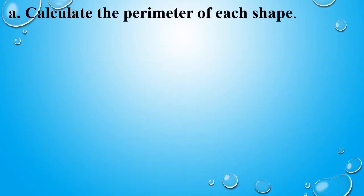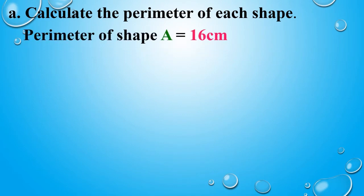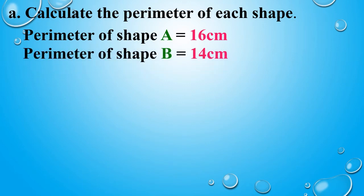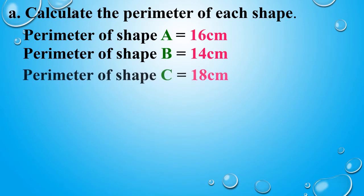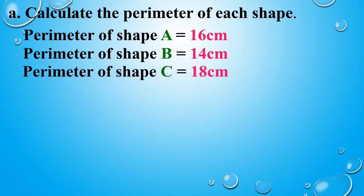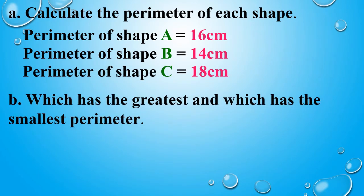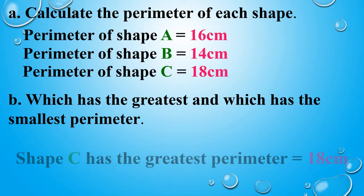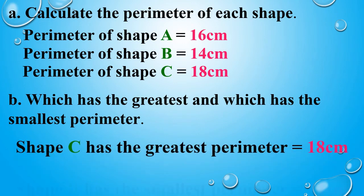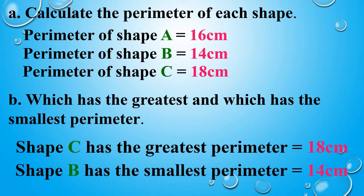According to the question, first of all we have to calculate the perimeter of each shape, which we have already found. Perimeter of shape A is 16 cm, perimeter of shape B is 14 cm, and perimeter of shape C is 18 cm. Now, which has the greatest and which has the smallest perimeter? Shape C has the greatest perimeter and shape B has the smallest perimeter.